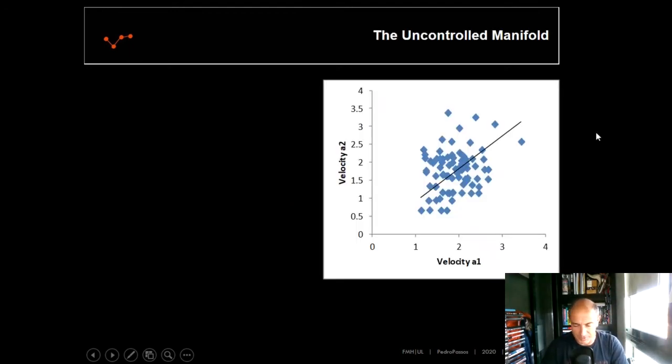A few years ago, in the late 90s, there is a beautiful paper from Schoener and Scholz where they present this idea of the uncontrolled manifolds. I will try to explain briefly this manifold and this uncontrolled manifold. So if we plot the velocity of subject 1 with the velocity of subject 2 on time, what we see here is a cloud of dots. These dots, in a certain way, represent how player 1 adjusts its velocity to player 2, to subject 2, and the opposite is also true.